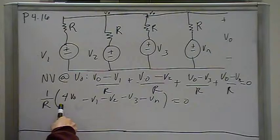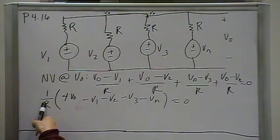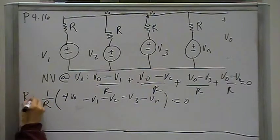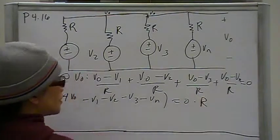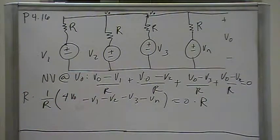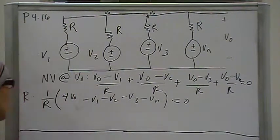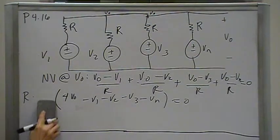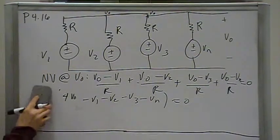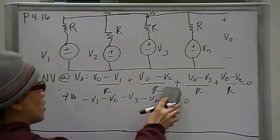So, then I'm going to multiply through by R, multiply both sides by R to get rid of this R. So, zero times R is zero, and that gets rid of R for me. Now, we can solve for Vout.